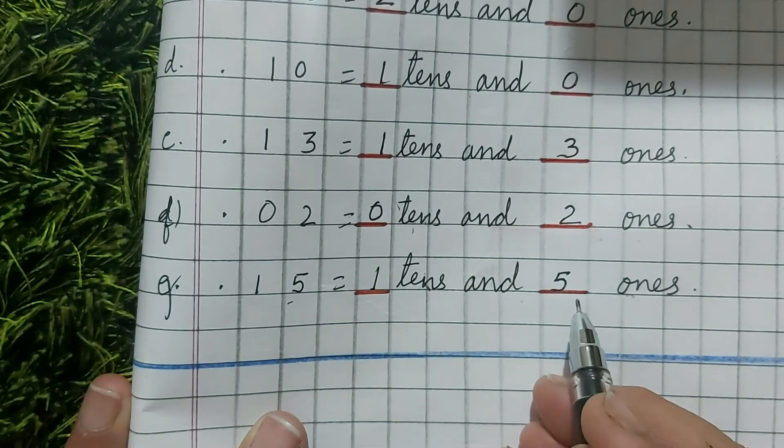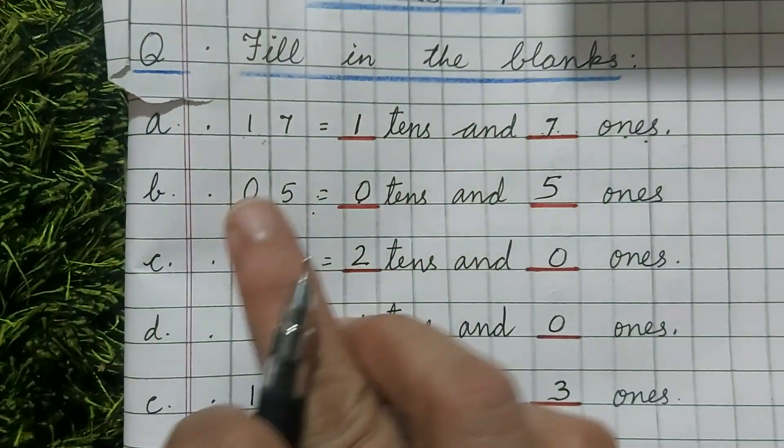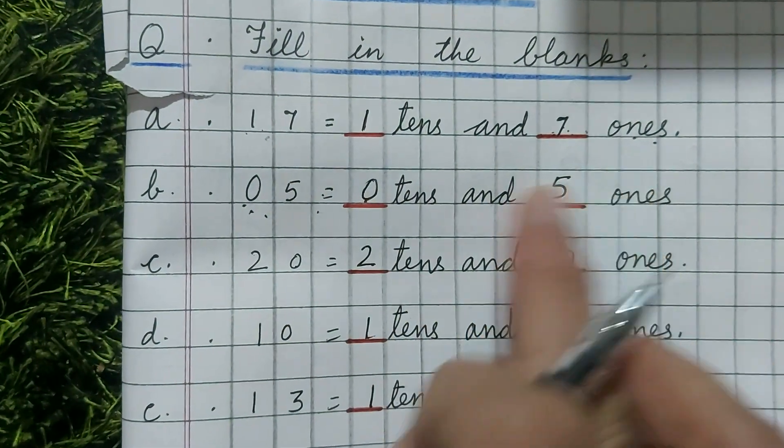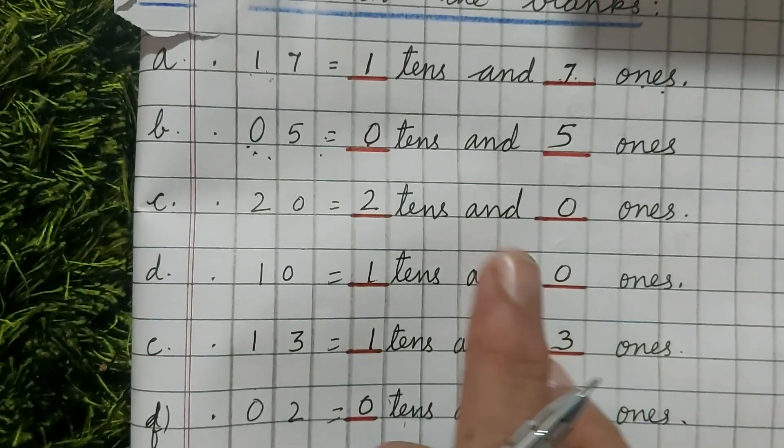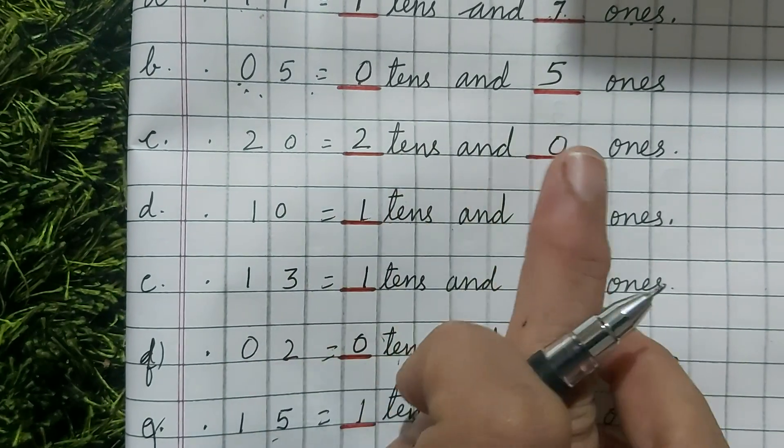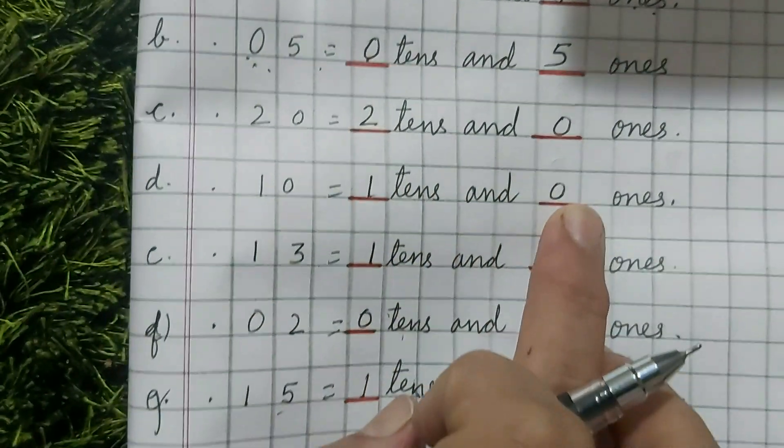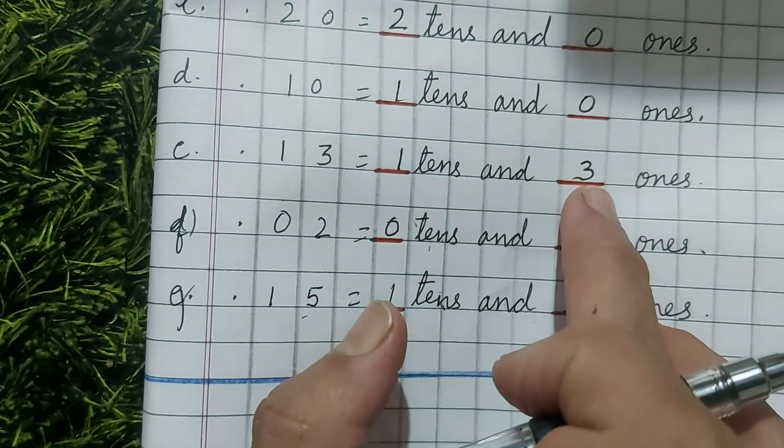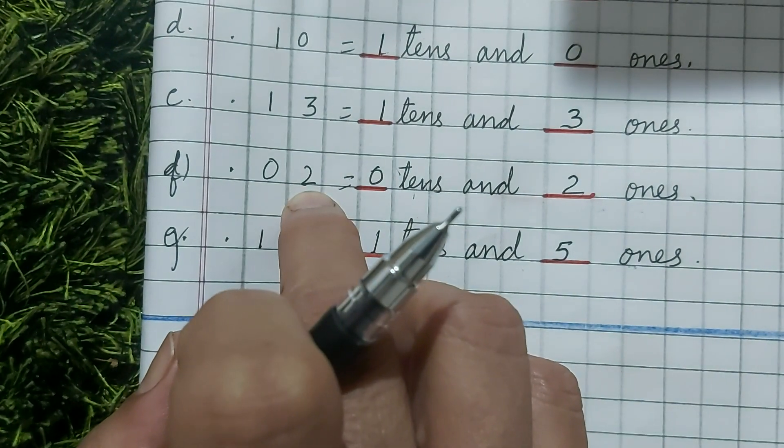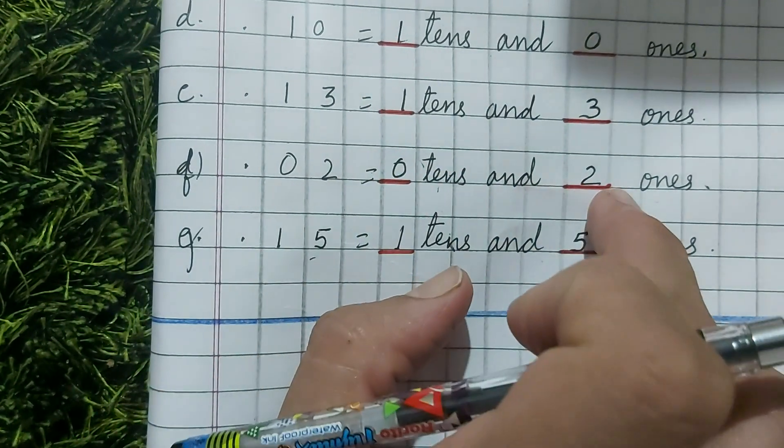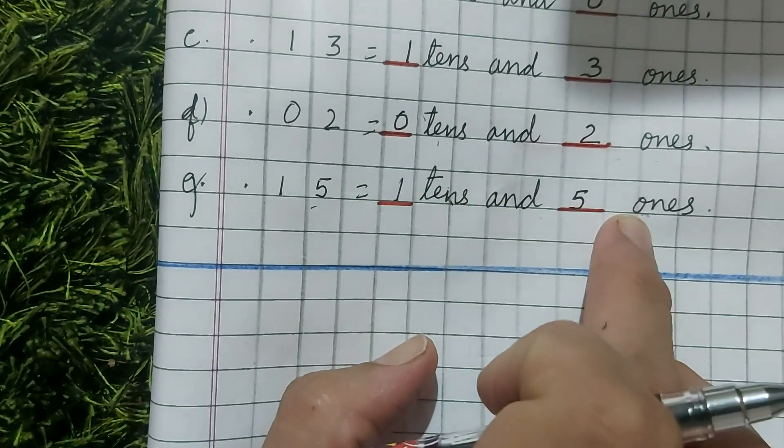1 ten and 5 ones. 17. 1 ten and 7 ones. 05. 0 tens and 5 ones. 20. 2 tens and 0 ones. 10. 1 ten and 0 ones. 13. 1 ten and 3 ones. 02. 0 tens and 2 ones. 15. 1 ten and 5 ones.